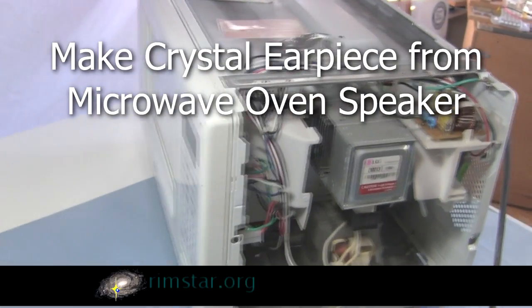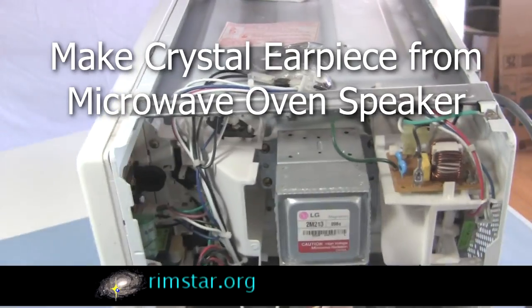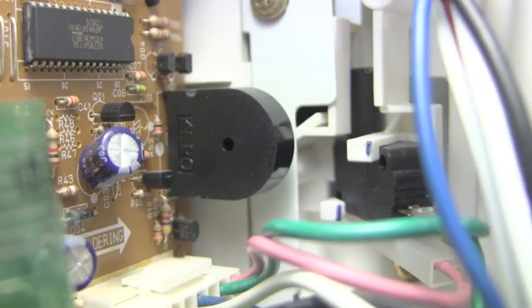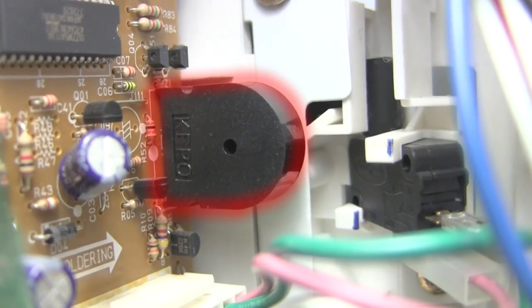Microwave ovens are a treasure trove of parts. What you do is take the cover off, and in this section right here on this side you'll find all sorts of things. Right over here, I'm interested in that black thing right there which contains a piezoelectric crystal speaker.